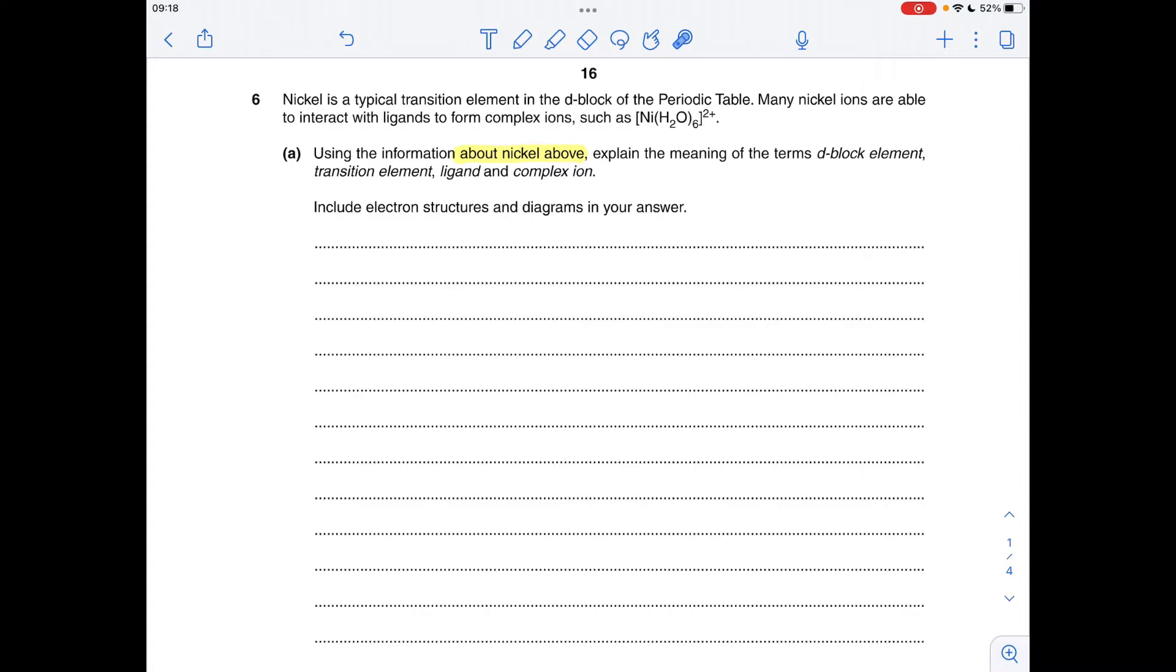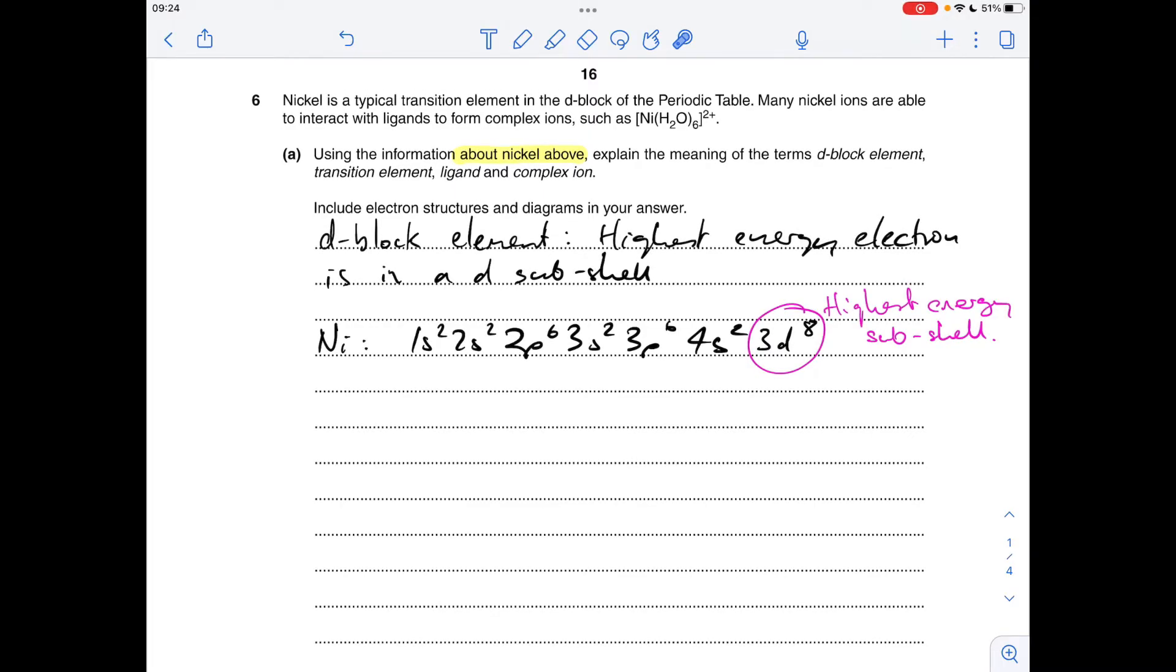We must use the information about nickel given above to address these four terms. Starting with d-block element, so we need to say that a d-block element has its highest energy electron in a d sub-shell. I'm going to give the electron configuration for nickel and show that the highest energy electron is indeed in that d sub-shell. I've written the electron configuration in order of increasing sub-shell energy, which puts the 3d sub-shell at the end.